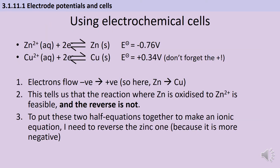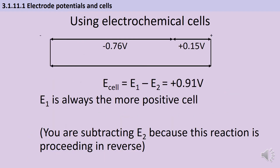Here's another similar example — again we've got the standard potential of zinc, but this time it's been paired with copper. Remember when you're writing these standard potentials you do need to write the positive sign if it's positive; it's not just implied. The electrons are going to flow from the negative place to the positive place, so here they're going to flow from the zinc half cell to the copper half cell. This tells us that the reaction where zinc is oxidised to Zn²⁺ ions is feasible but the reverse reaction isn't. If I'm going to put these half equations together to make an ionic equation I'm going to flip the more negative or less positive one around. Once I know which reaction proceeds as a reduction and which one I need to flip, I can think about what the overall potential difference for a cell will be — that's important both for powering something and for telling me whether a redox reaction between those two species would actually happen.